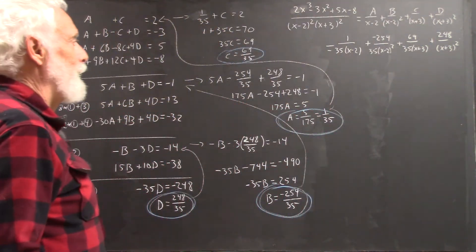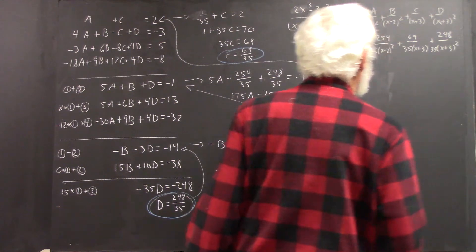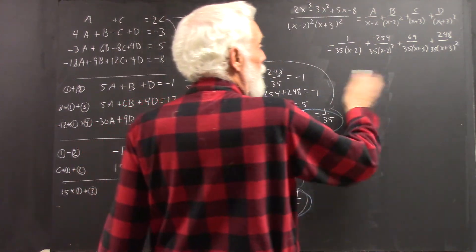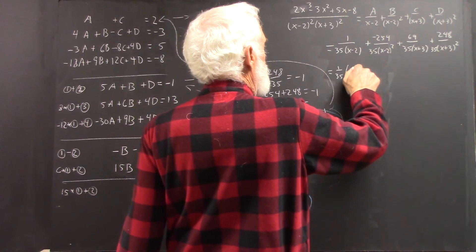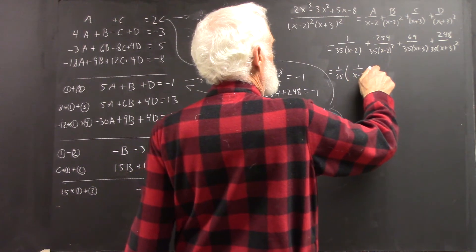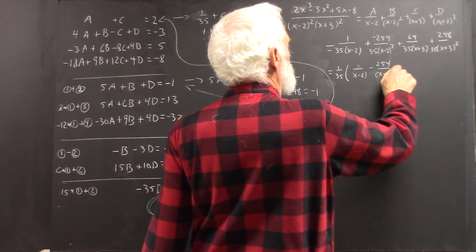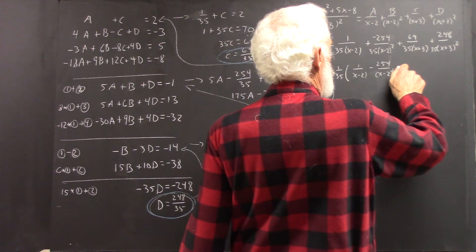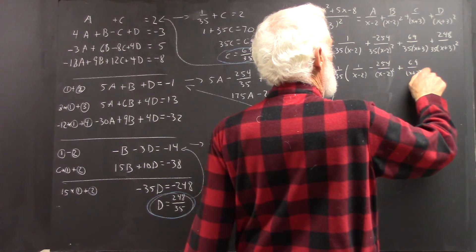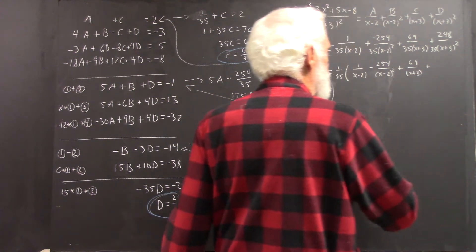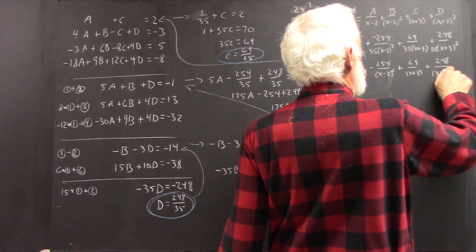Now, before I go on with this, I don't have to keep writing those 35s, and I didn't write the 35 here. So, I'm just going to factor out 1 over 35. And now I've got 1 over X minus 2 minus 254 over X minus 2 quantity squared, plus 69 over X plus 3 plus 248 over X plus 3 quantity squared.